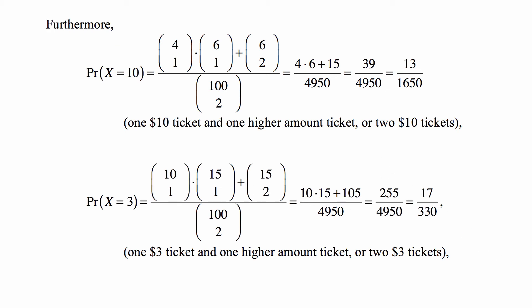What about X equal to 3? That means that we have one $3 ticket and one higher amount ticket, or two $3 tickets. There are 15 $3 tickets, so choosing one of them is 15 choose 1. And 10 higher amount tickets, 4 plus 6 from before. So 10 choose 1 times 15 choose 1 plus 15 choose 2, choosing two $3 tickets out of 15 available. And again divided by the total number of ways of picking two tickets, and this answer being 17 over 330.